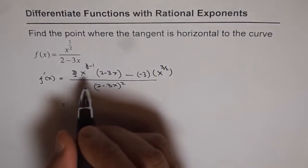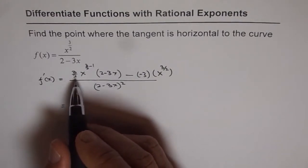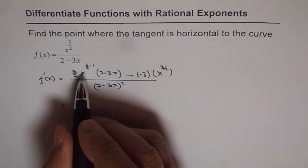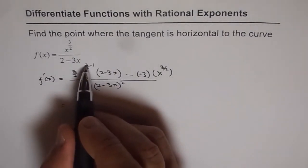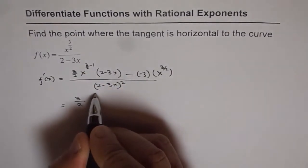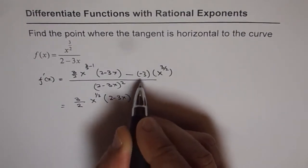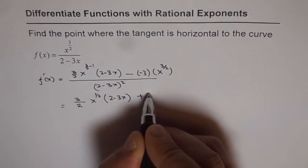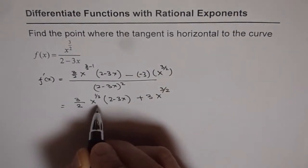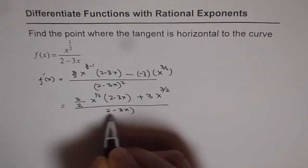Now we will try to simplify this. We get 3 over 2 times x to the power of 3 minus 2 over 2, which is x to the power of 1 over 2, divided by 2 minus 3x whole square.